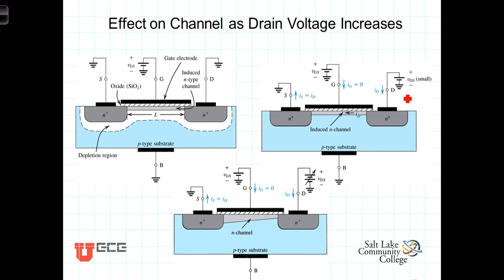Current then began to flow when we started to increase the voltage between the drain and the source. When the voltage between the drain and the source was relatively small, we could assume that the channel induced by the gate voltage was uniformly shaped across the entire length of the channel and uniform in depth. In this video, we consider what happens as we continue to increase the drain voltage.